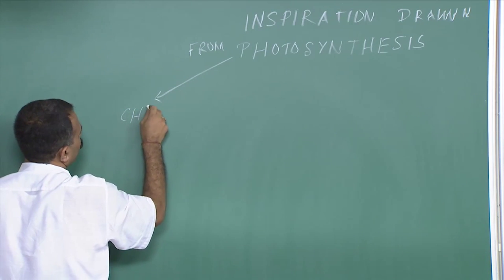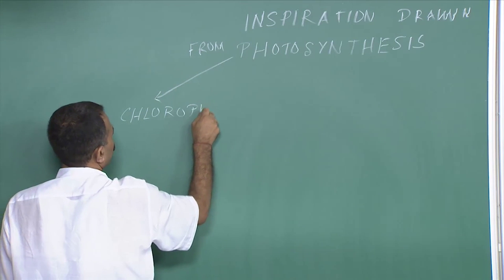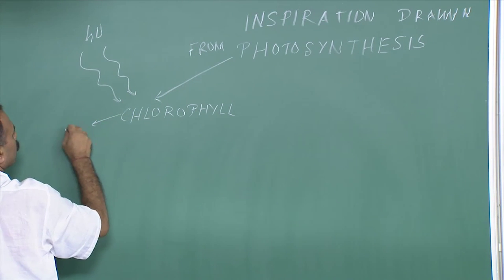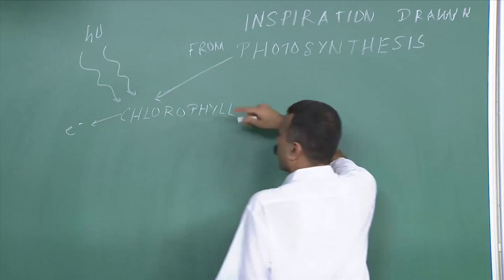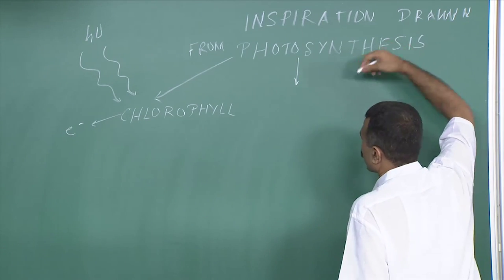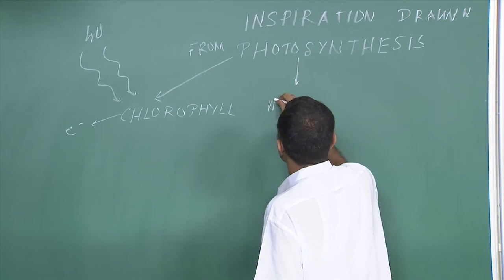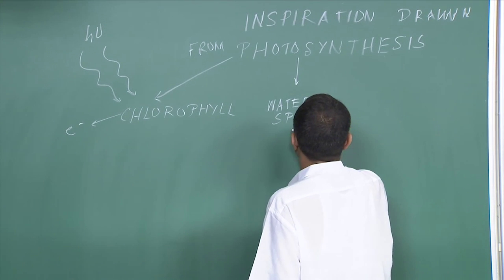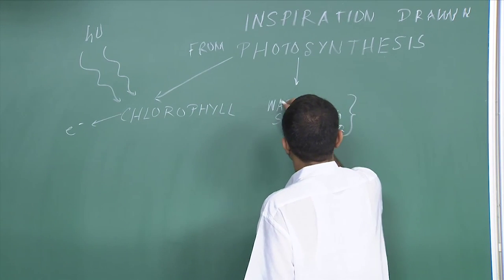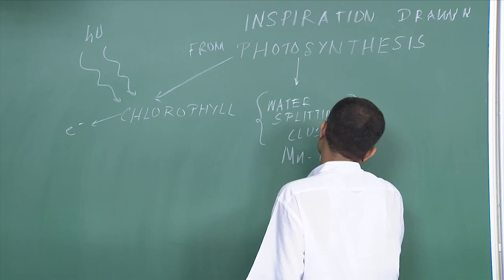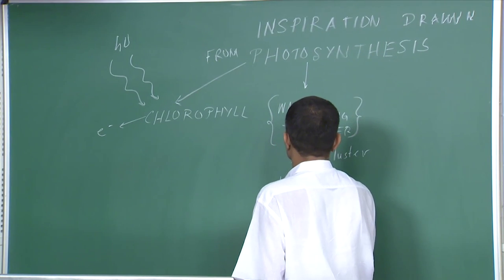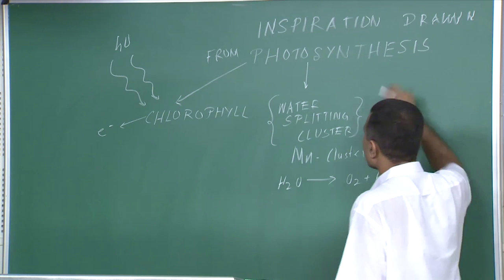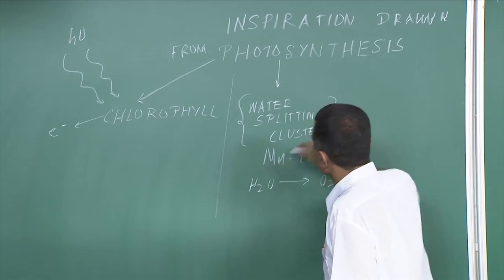One of the most inspiring molecules is of course chlorophyll itself, which has the ability to absorb light and eject an electron, leading to the whole electron transport and synthesizing energy-rich molecules. The next inspiration is the water-splitting cluster or manganese cluster within the photosynthesis system, where the water molecule is split up into oxygen and hydrogen. This is the second inspiration where people are working, as we discussed in the previous lecture.